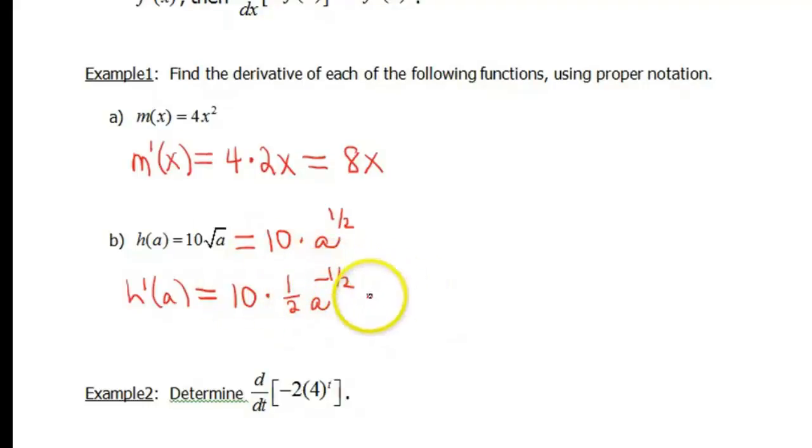So if you want to simplify this a little bit, we can go ahead and multiply that 10 by the 1/2 if you wanted. And that would give us 5a to the negative 1/2 power. And again, you can do more with this exponent being negative in a fraction if you want to, but that's certainly up to your instructor.